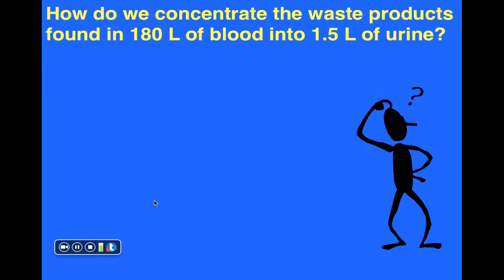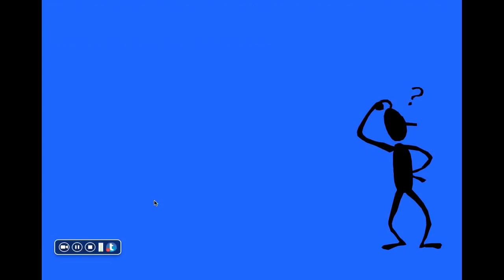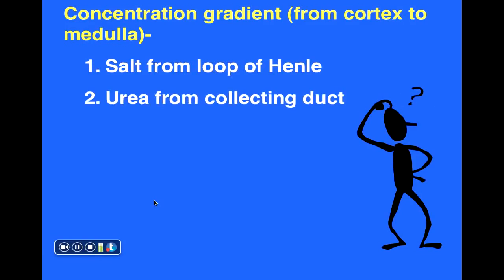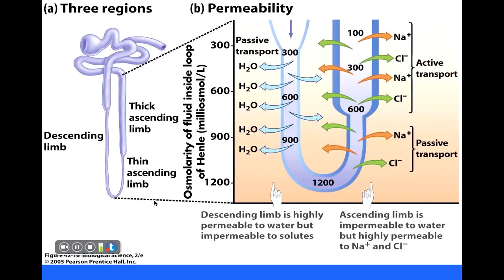How can we concentrate waste products found in roughly 180 liters of blood filtered each day into just one to two liters of urine? First, there is a concentration gradient of solutes as we go from the cortex deeper into the medulla. The solutes involved include salt released from the loop of Henle and urea released from the collecting duct.